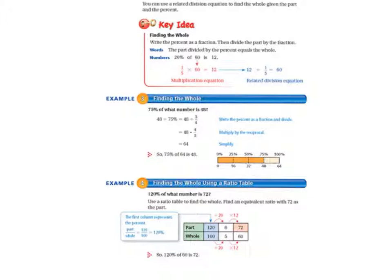Now we're moving on to page 227. And at the top of that page, we have a new key idea to write in your notes. So please copy this down. It says you can use a related division equation to find the whole when you're given the part and the percent. So finding the whole, we write the percent as a fraction. Then we divide the part by the fraction. So the part divided by the percent equals the whole.